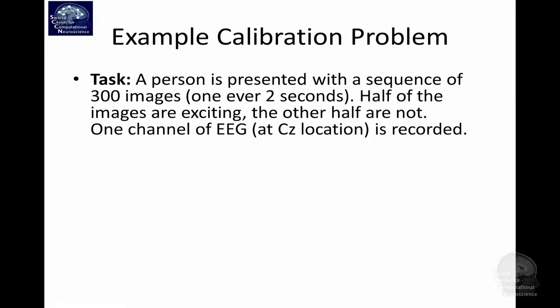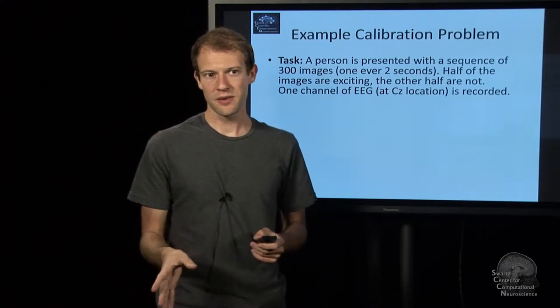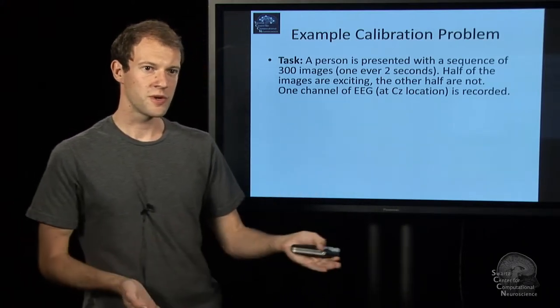So I'll give you an example problem, a learning problem or calibration problem. We have a task that the person is supposed to do. Say we record some data in which we are presenting a person with a series of pictures. A person has EEG recorded and we present one picture every two seconds. Half of these pictures are exciting and half of them are not. This is how we set them up.